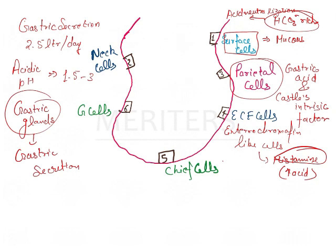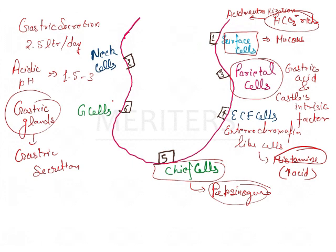Then we have the chief cells. Chief cells produce pepsinogen, which is a protein-digesting enzyme. Then we have the G cells, which secrete gastrin.